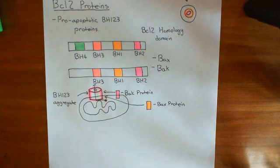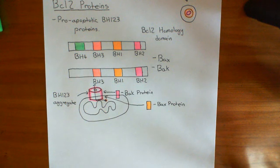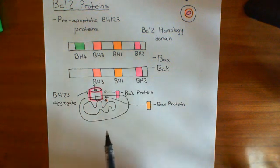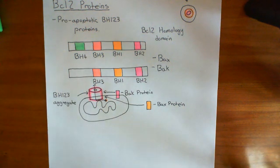BAX and BAK are always trying to lead to the intrinsic pathway of apoptosis being activated. We'll continue in the next video and see what proteins are inactivating the BAK and BAX proteins.